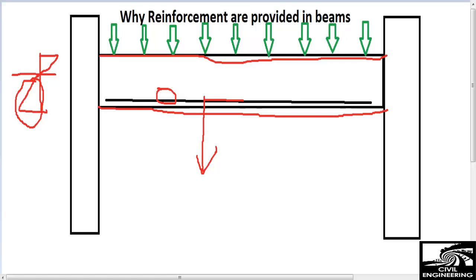It should be remembered: wherever tensile forces are acting in your beam — for example in a cantilever beam, tensile forces come on the top side — you should provide the reinforcement in that direction. Reinforcement is always provided in the direction where tensile forces are coming, whether in a beam or a column. This is the basic concept of reinforcement in beams and any structural member. Please comment if you have questions and subscribe for more videos. Thank you.